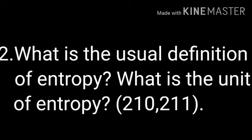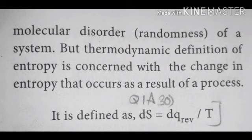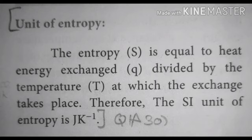Question 2: What is the usual definition of entropy? What is the unit of entropy? Answer: book page number 210 and 211. Page number 210, left side, last line up to 210 right side for entropy definition. Entropy unit: page number 211, right side.